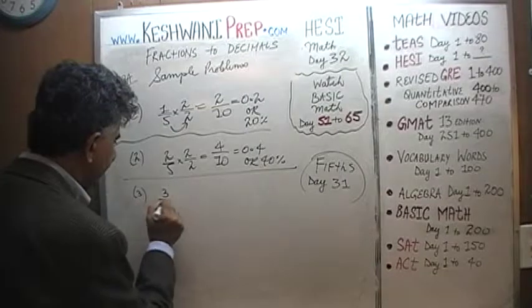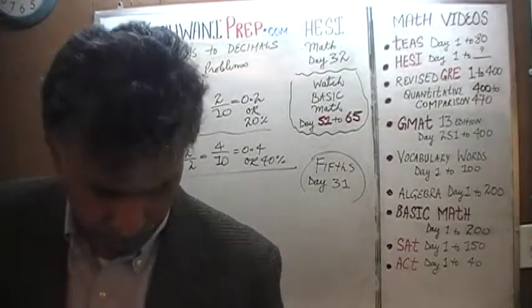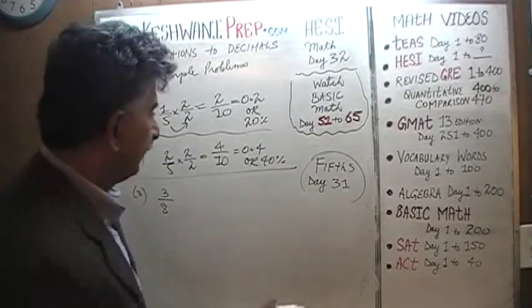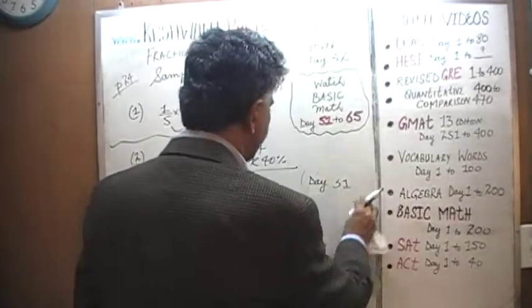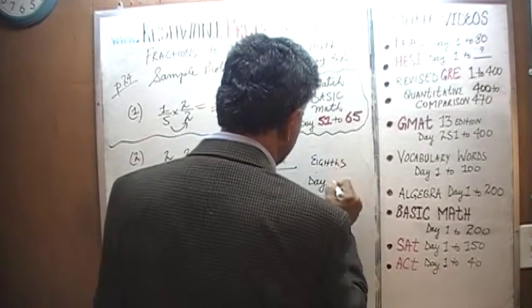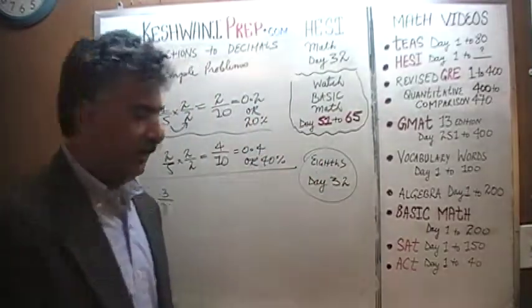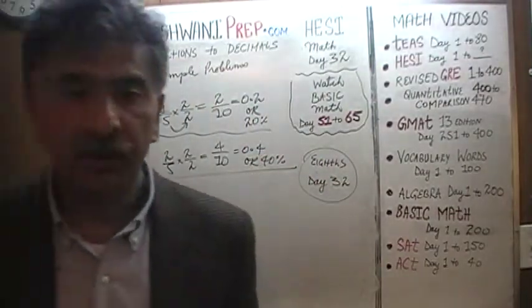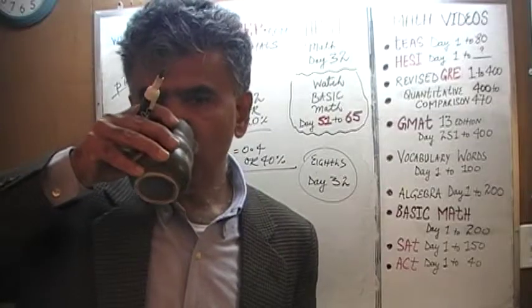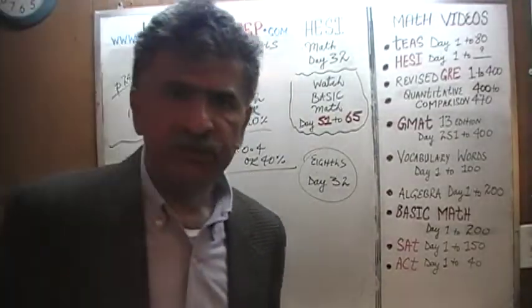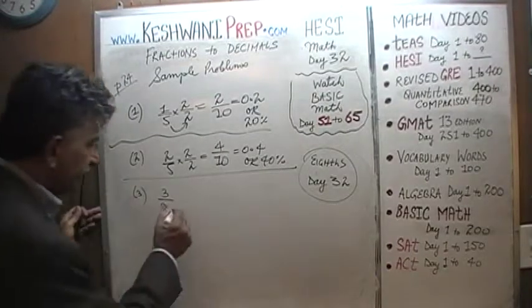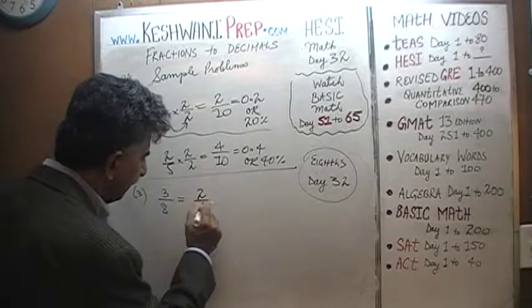Three-eighths. Three-eighths is a tricky one. You have to know your eighths. You have to know your eighths and we learned our eighths on day number thirty-two. Eighths is what people have trouble with being able to figure out how to represent a given amount of eighths into decimals and percentages. One-eighths, two-eighths, three-eighths, and so on and so forth. Here we have three-eighths.